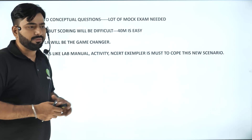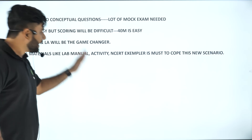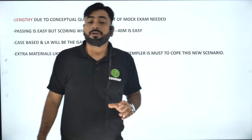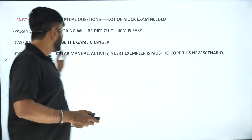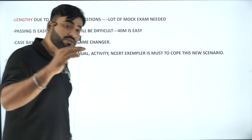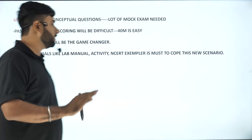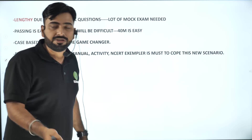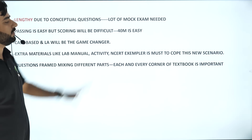You need extra materials — one mark, two mark extra. Materials like lab manual, activity, part text, NCERT exemplar — all things need to be covered. NCERT has questions that you have to properly do. Lab manual experiments, activity, and exam questions — you have to do these properly. To score 65-70 out of 80, it will work. Questions are framed by mixing different parts, so each and every corner of the textbook is important.